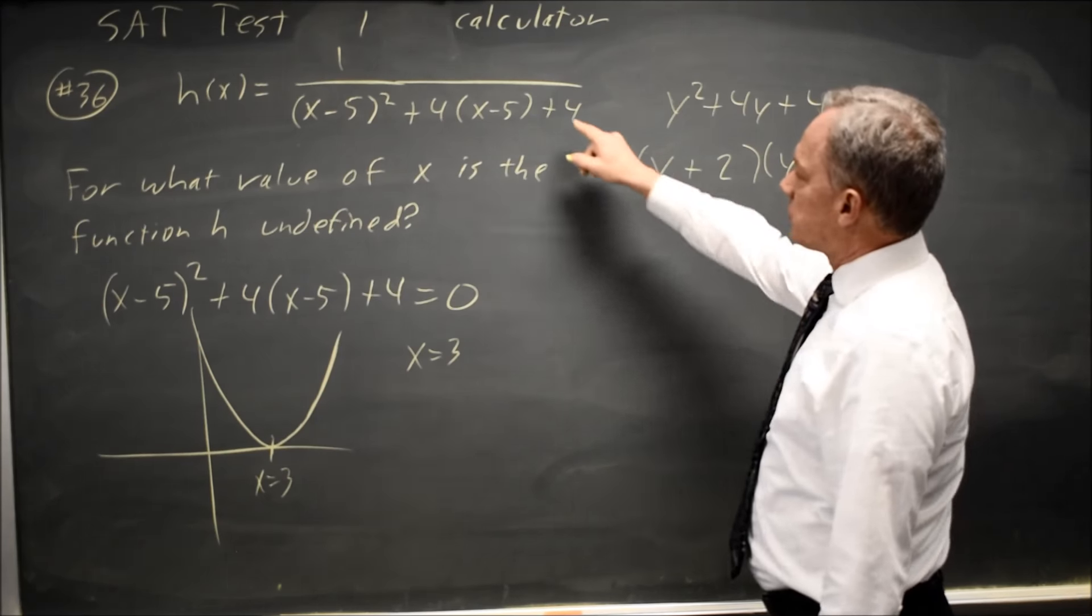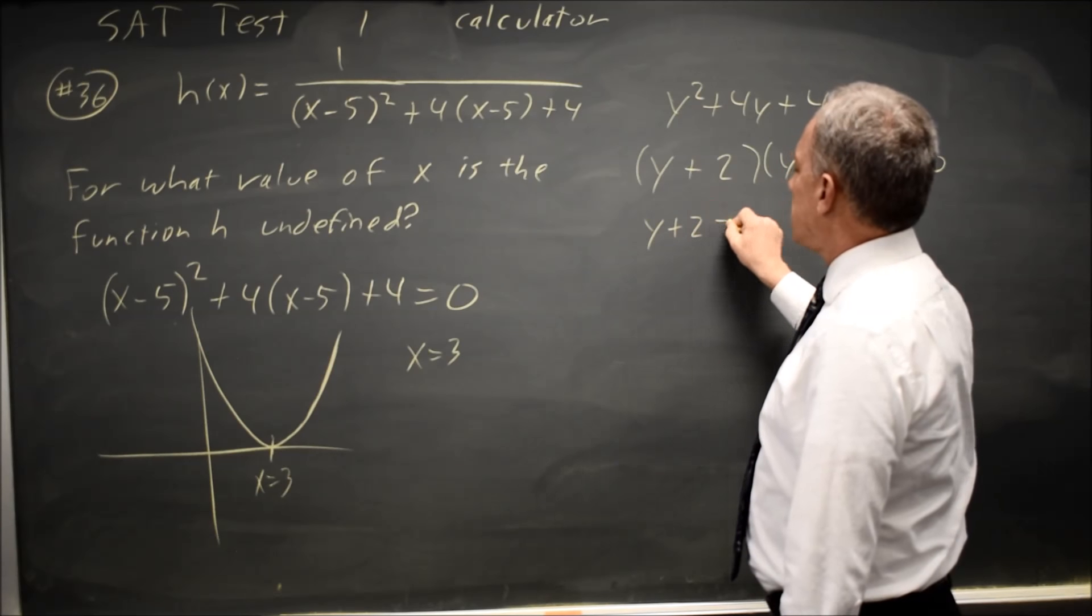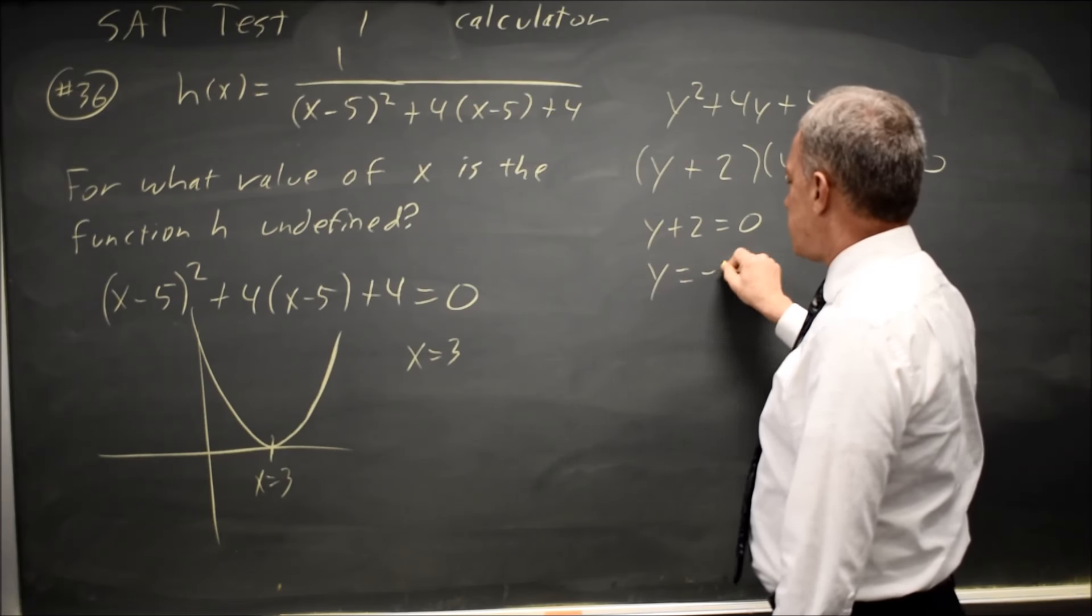So this product equals 0 if I'm dividing by 0. y + 2 = 0, y = -2.